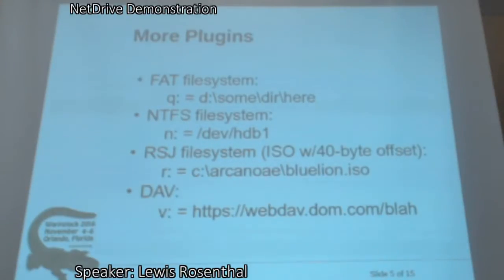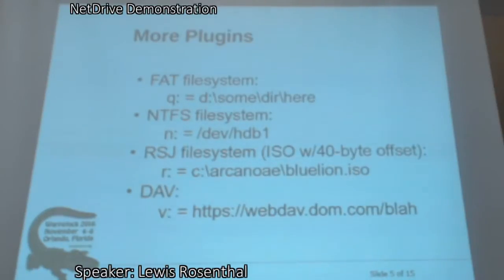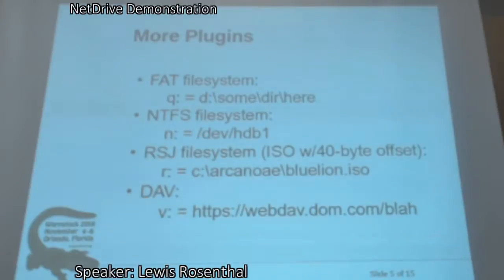RSJ file system. If you're familiar with RSJ CD Writer, you'll know that the images created by RSJ CD Writer are 40 bytes offset. So if you want to access them like regular ISOs, you need to either convert them, or you can use the RSJ file system driver for NetDrive, which automatically does the 40-byte offset. And then you can treat them like any other ISO.